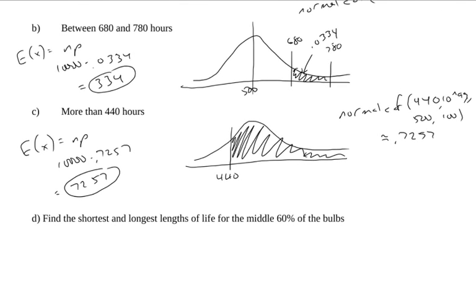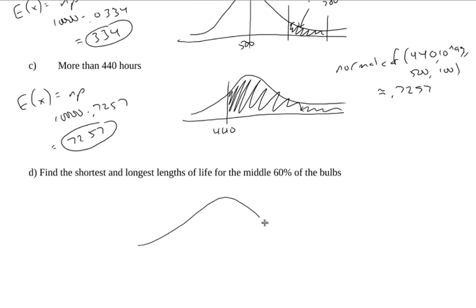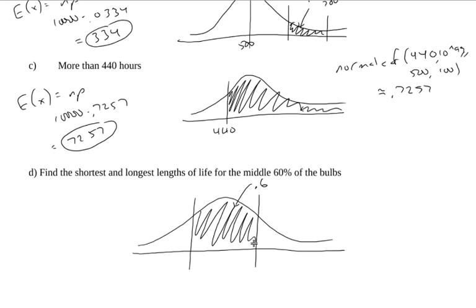All right, if I wanted to find the shortest and the longest lengths of the middle 60% of the bulbs. This is a little bit of a stranger way of thinking about it. I have lower and upper cutoffs that I'm trying to find. So I'm trying to find here the shortest and the longest lengths of life. And I'm saying there's middle 60% here. So inside here, there's 60% of the area. And I'm trying to find out what these cutoffs are, Z lower and Z upper.